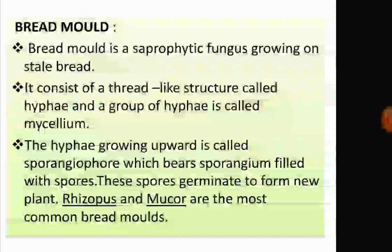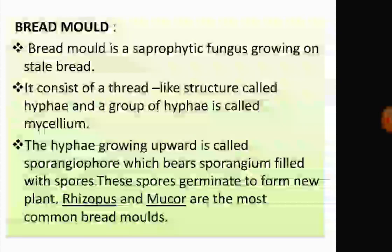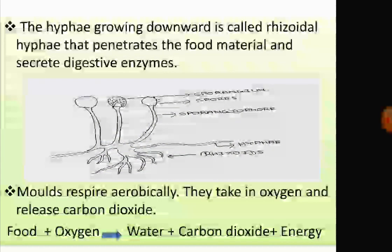The sporangium is filled with spores, as shown in the figure. These spores germinate to form new plants. Common examples of bread molds are Rhizopus and Mucor. You can see the sporangiophore and the sporangium with spores in the figure.